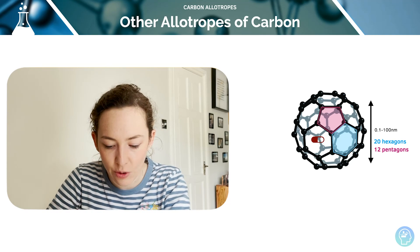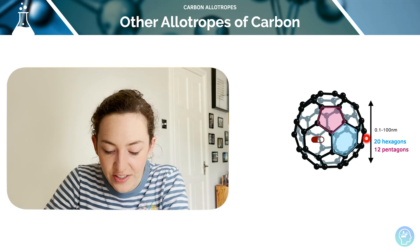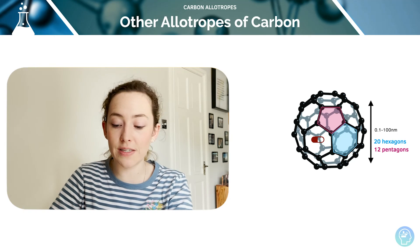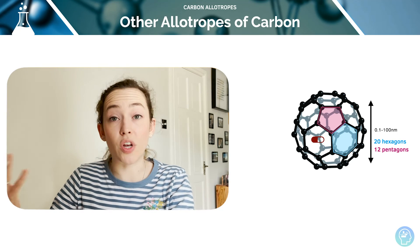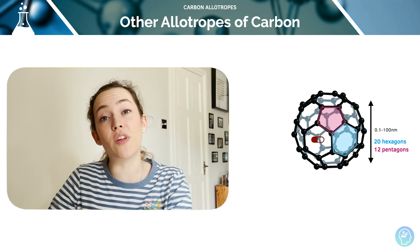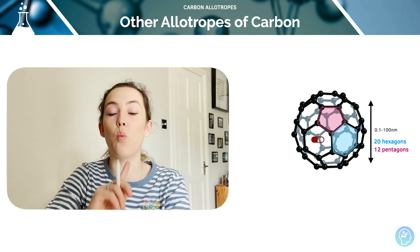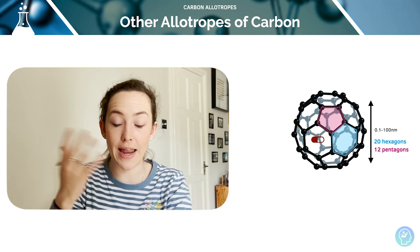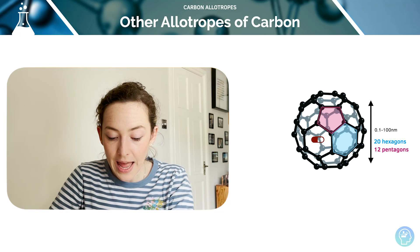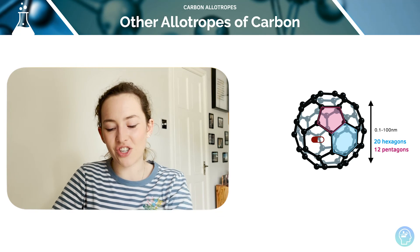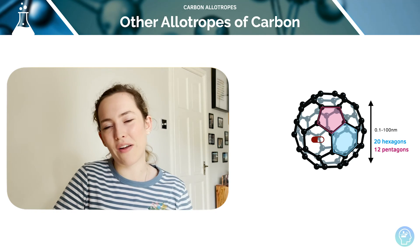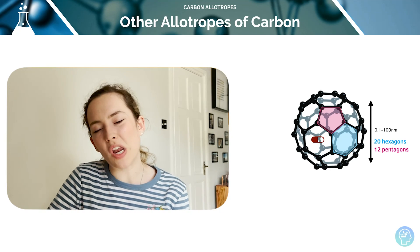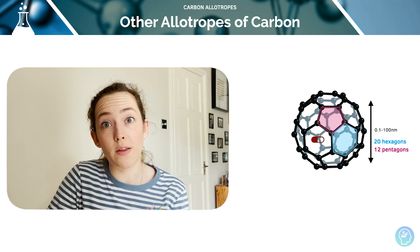Buckminsterfullerene is very soft because only a little energy is needed to overcome the forces. It's an electrical conductor because it has one delocalised electron per carbon atom that is not involved in a covalent bond. However, the extent of delocalisation is less than in graphite, so the electrical conductivity is worse in comparison.